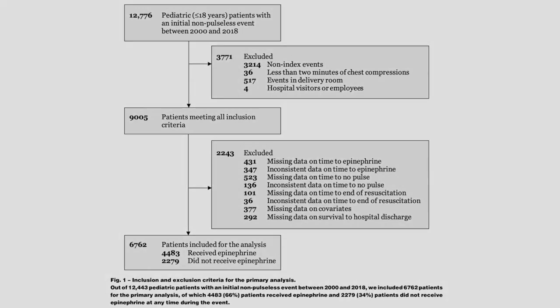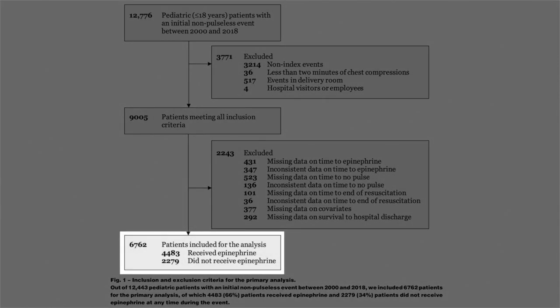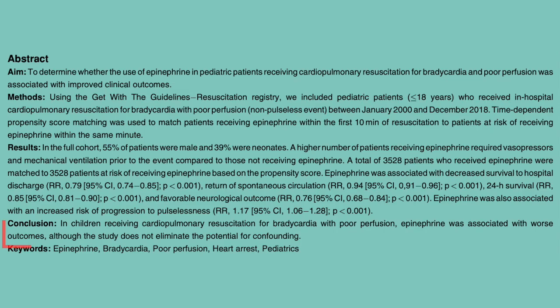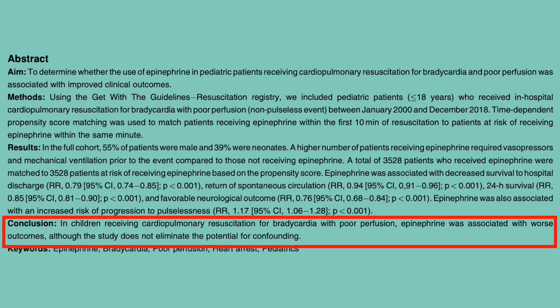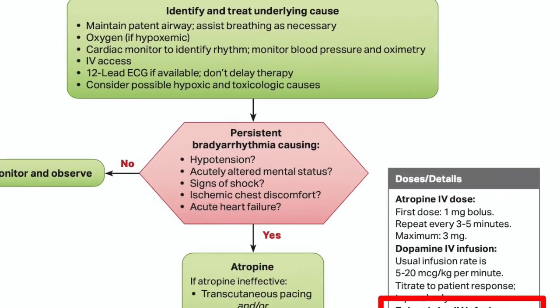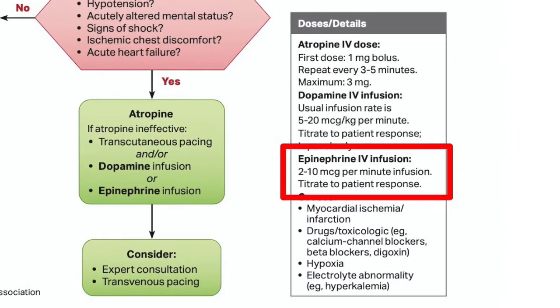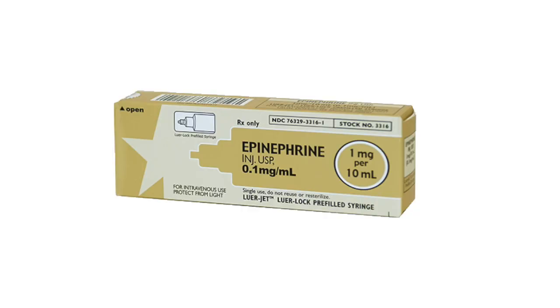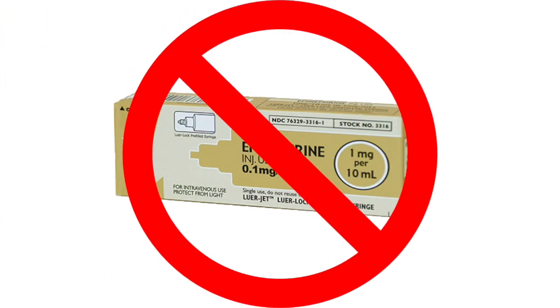So here we have a study, very well done — of course it has some limitations — but they enrolled almost 7,000 children, and it clearly demonstrated that cardiac arrest dose epinephrine can be harmful when given in this patient population, while the ACLS guidelines for similar patients calls for an epinephrine infusion. This is because we want to avoid giving cardiac arrest dose epi to adults with a pulse.